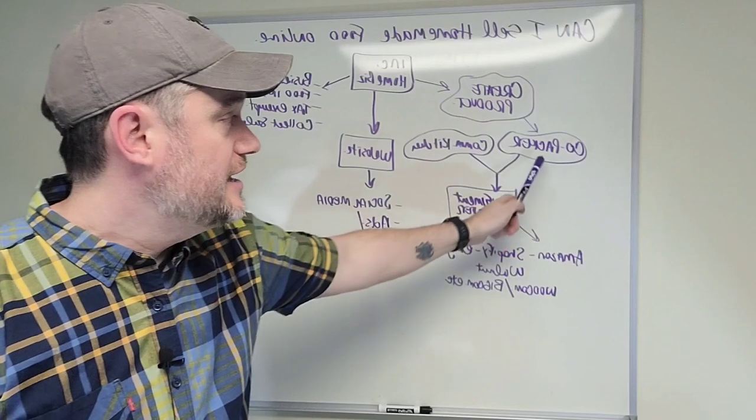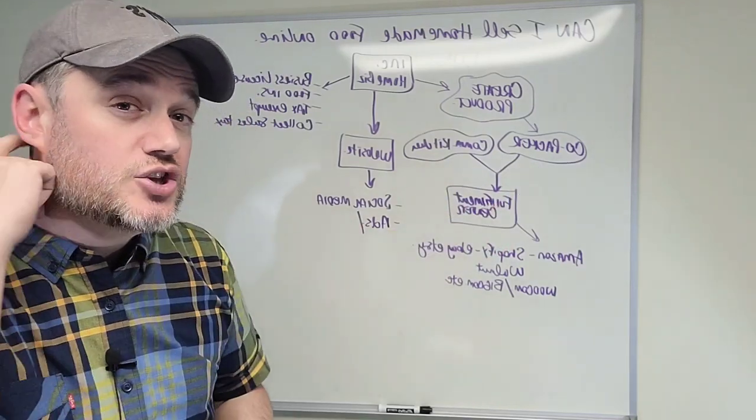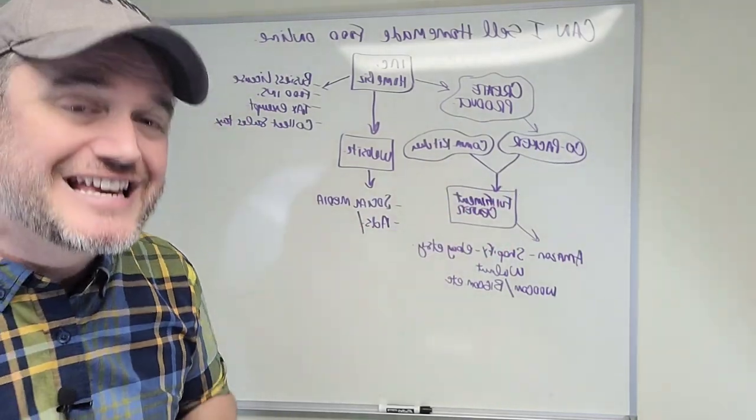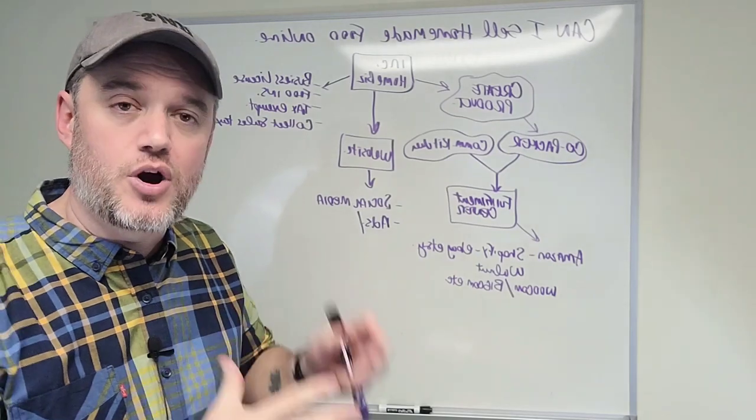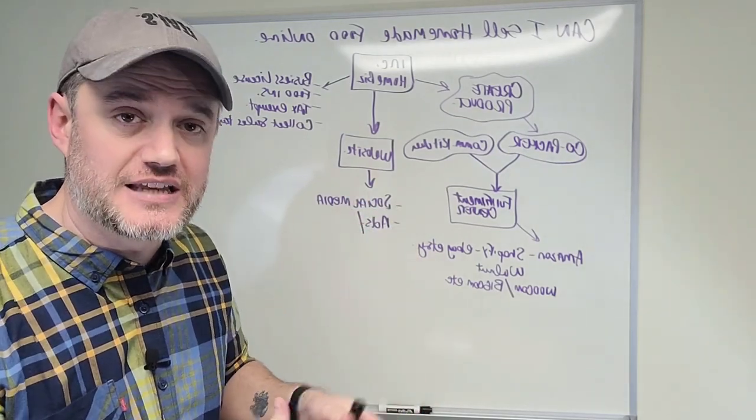So creating your product. Incorporate, create the product. Next up, you have two options. You can actually do this in two different ways. This is where the technical part of the food production end starts.